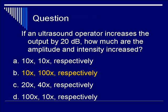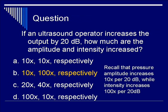Recall that the decibel equation for amplitude is 20 times log of A2 over A1, whereas for intensity it is 10 times the log of I2 over I1. Therefore, pressure amplitude increases 10 times for every 20 dB, while the intensity increases 100 times per 20 dB.